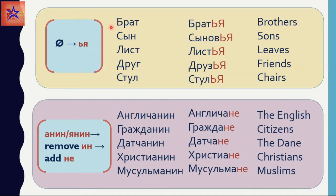The next group's endings are soft sign plus Я sound. So to брат we add these letters and we have Братья in the plural form. Сын becomes Сыновья — you see ОВ letters are also added. Лист becomes Листья. Друг becomes Друзья, and again the sound changes: from Г it becomes З. Стул becomes Стулья in the plural form.